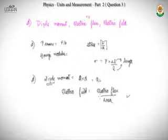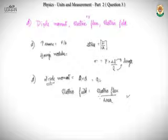This approach took under two minutes without computing full dimensional formulas for each quantity. The faster method is to check the relations between quantities rather than deriving dimensions from scratch — just check the formulas connecting them.